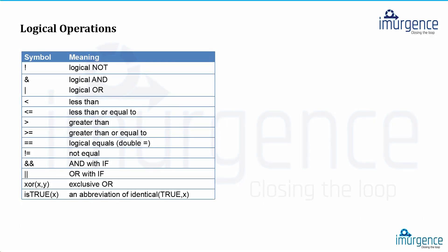Now, some logical operator symbols and their meanings: the exclamation sign stands for logical NOT, the ampersand sign stands for logical AND, the pipe symbol — the standing straight line — stands for the OR operator. Less than, less than or equal to, greater than, greater than or equal to, and equal to — which checks whether the left-hand side is actually equal to the right-hand side.